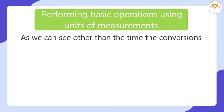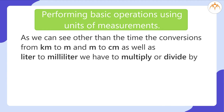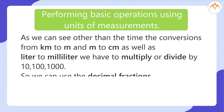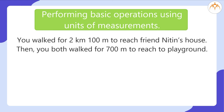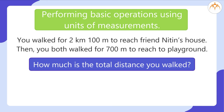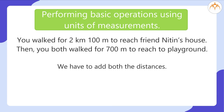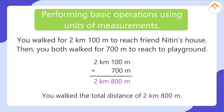Let us start with an example. Other than time, the conversion from kilometer to meter, meter to centimeter, and litre to millilitre requires multiplying or dividing by 10, 100, or 1000, so we can use decimal fractions. You walked 2 kilometers and 100 meters to reach your friend Nitin's house, then both of you walked 700 meters to reach the playground. The total distance is 2 km 100 m + 700 m = 2 kilometers and 800 meters.